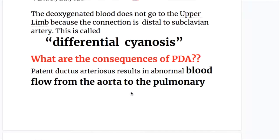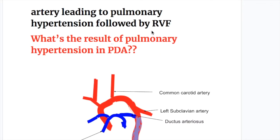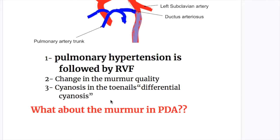Patent ductus arteriosus results in abnormal blood flow from the aorta to the pulmonary artery, leading to pulmonary hypertension followed by right ventricular failure. The consequences of pulmonary hypertension in PDA are: first, right ventricular failure; second, change in murmur quality; and third, cyanosis of the toenails, known as differential cyanosis.